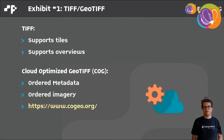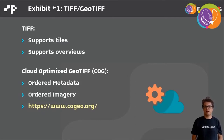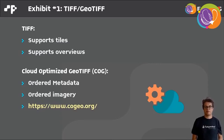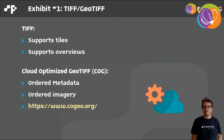TIFF is a very flexible raster format. There is a GeoTIFF implementation that has been around for a long time, and this GeoTIFF already supports tiling and overviews. So there's not much to be done for optimizing it for web access — it's about ordering the metadata and ordering the imagery. And that's about it. Then you have Cloud Optimized GeoTIFF, or COG for short.